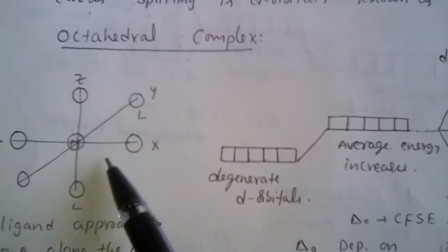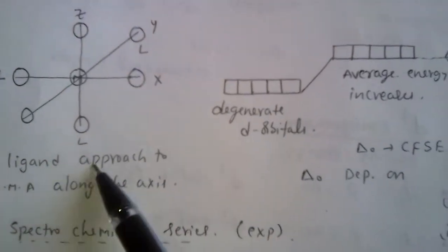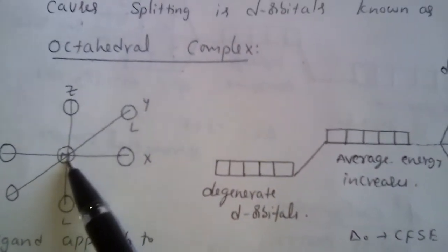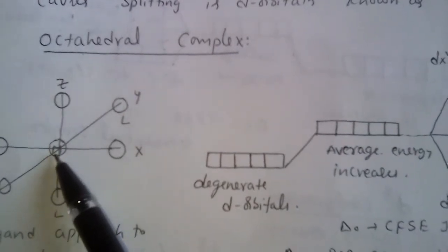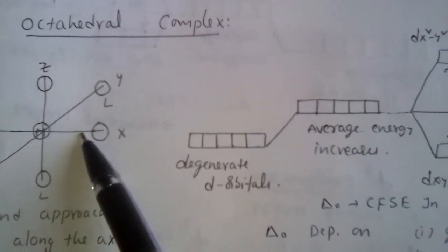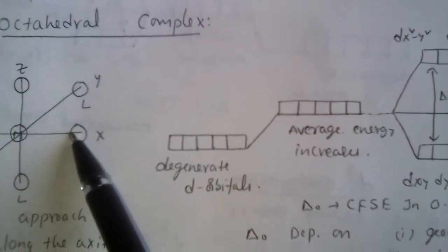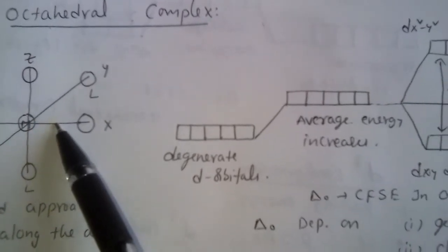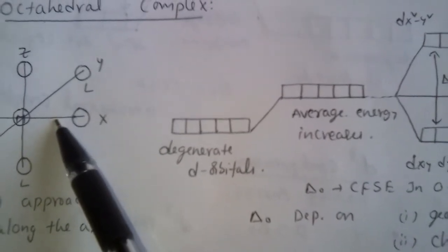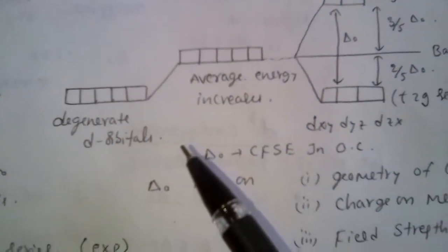Because ligands approach along the axes, repulsions between them are less. In the central metal atom, degenerate d-orbitals are present. The orbitals with lobes along the axes are dx²-y² and dz², so ligands have more interaction with these orbitals. Because of these interactions, the energy of dx²-y² and dz² increases. The remaining three orbitals — dxy, dyz, and dzx — their energy decreases.